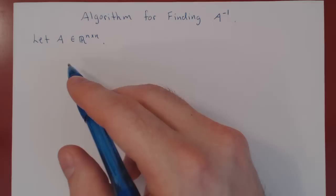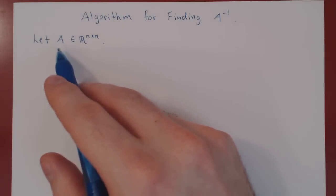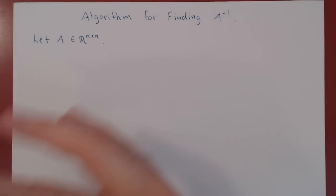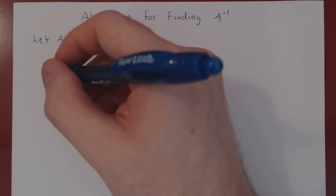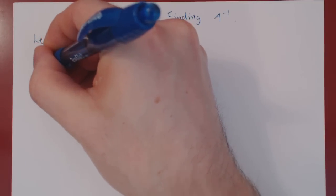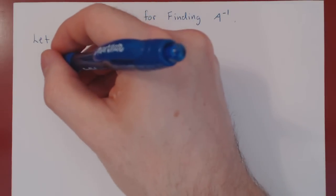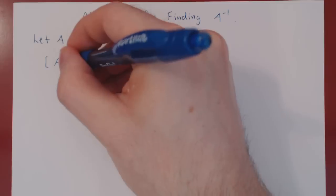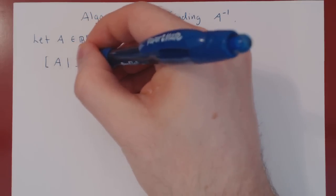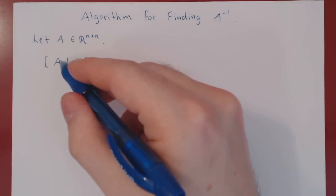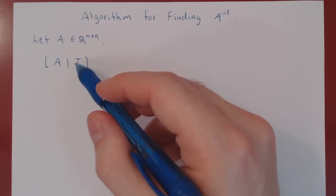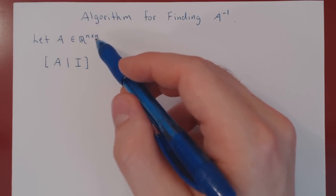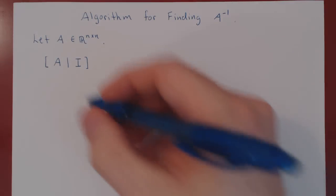Here's the algorithm. You take an arbitrary square matrix — it could be a 5 by 5, a 20 by 20, it doesn't matter. The first step is to create an augmented matrix: augment A with I. You add to A the entire identity matrix of the same size, so if A is n by n, I is also n by n.